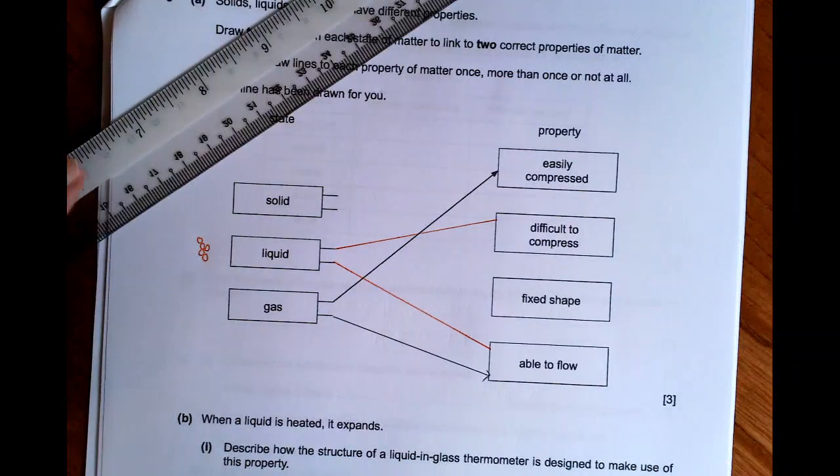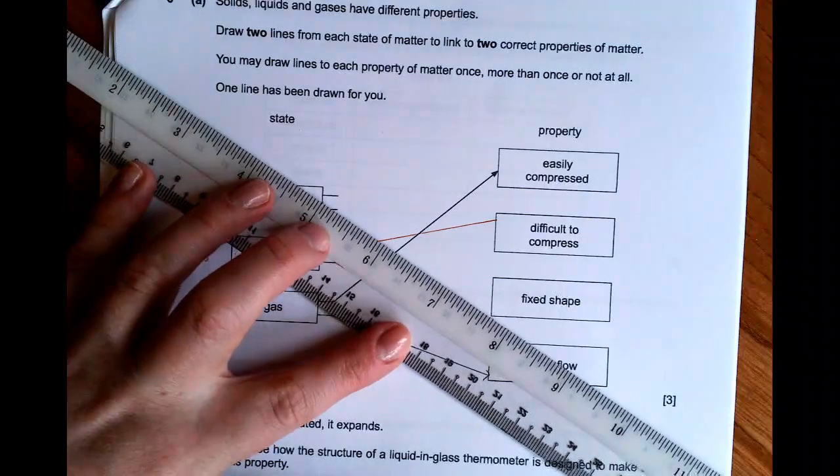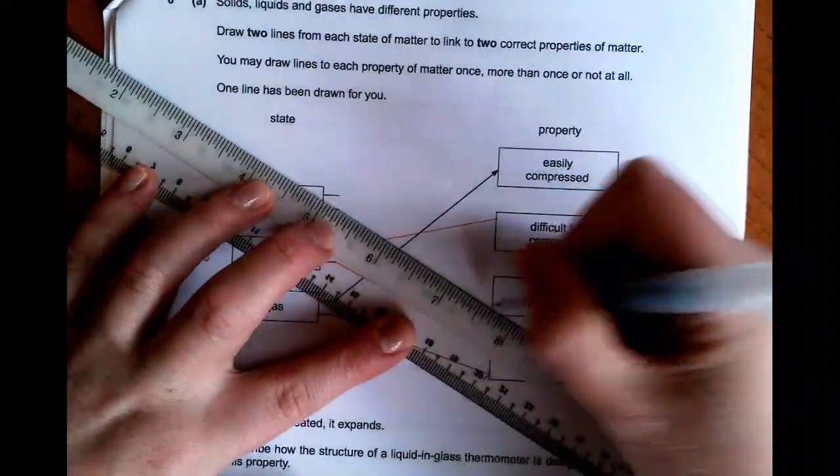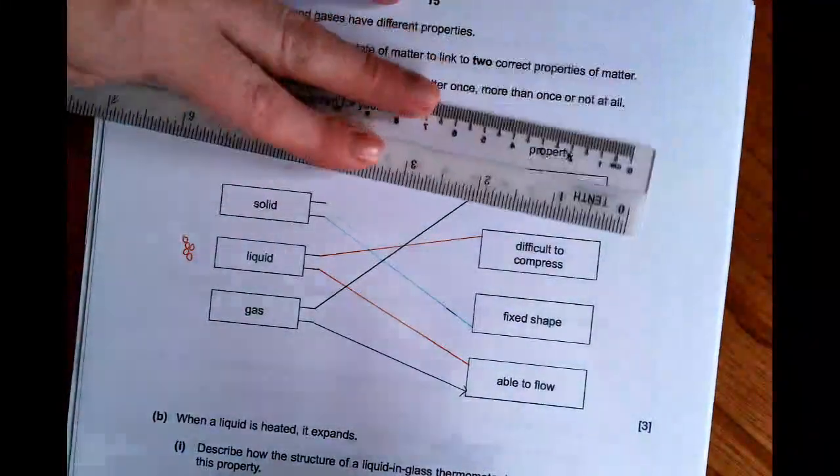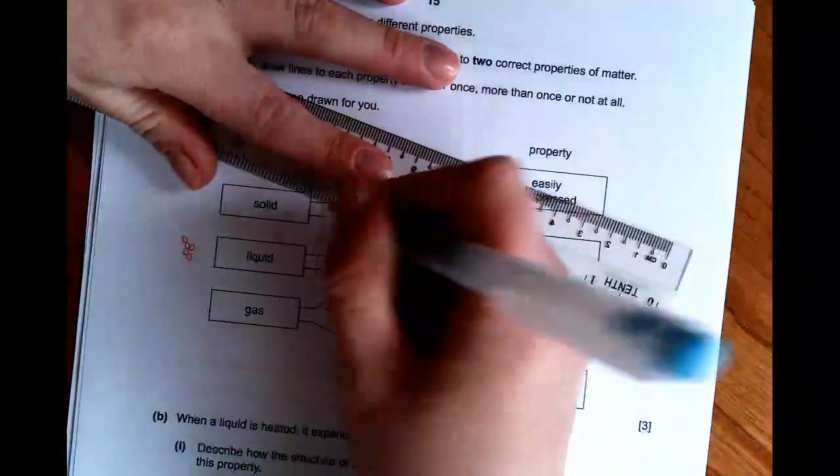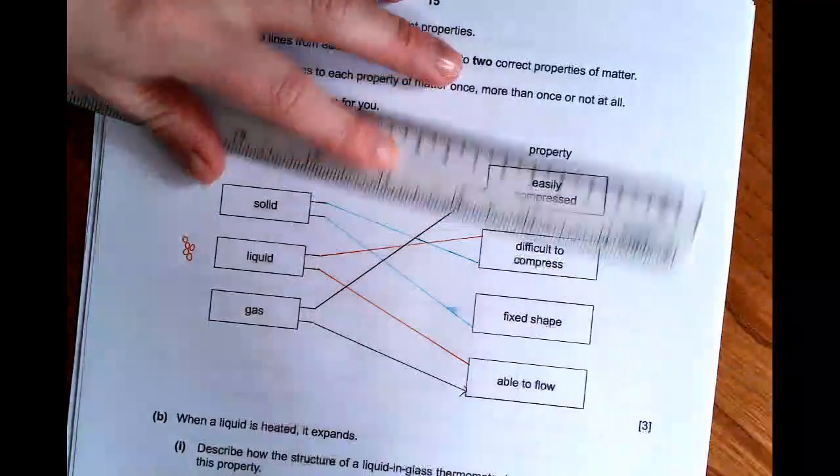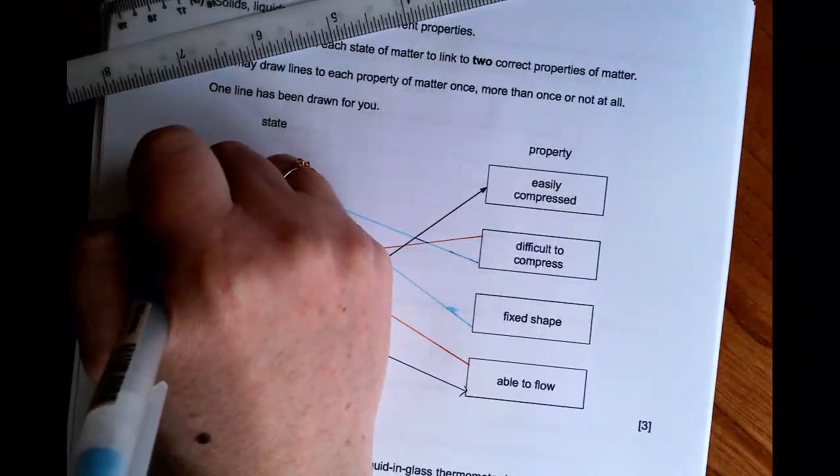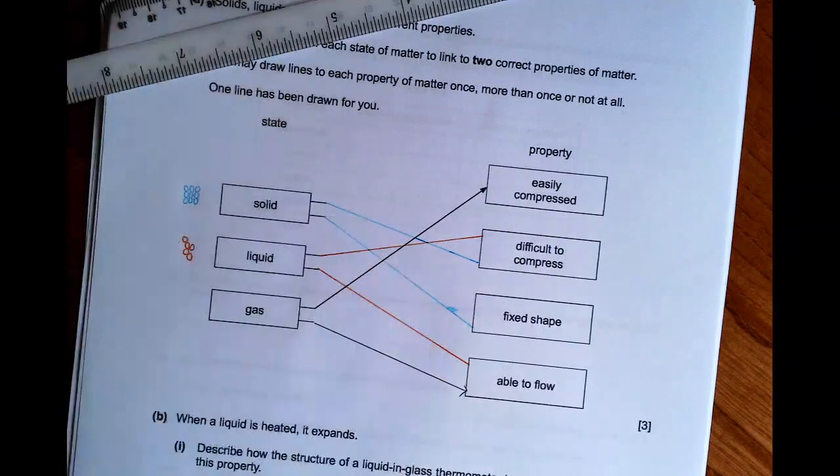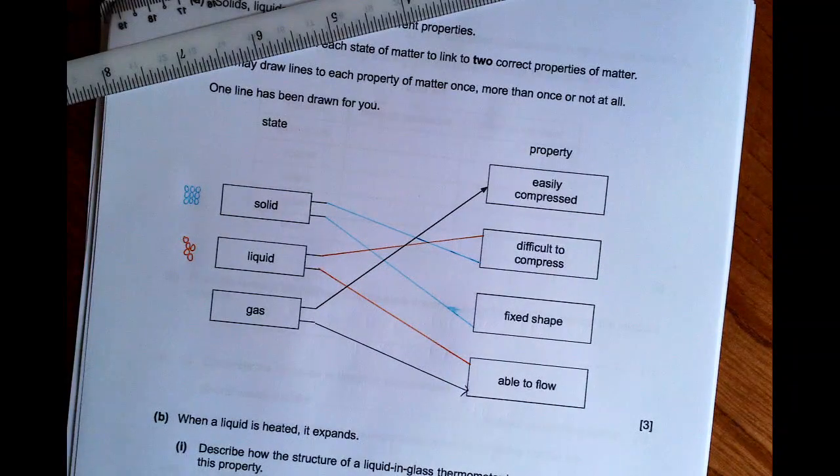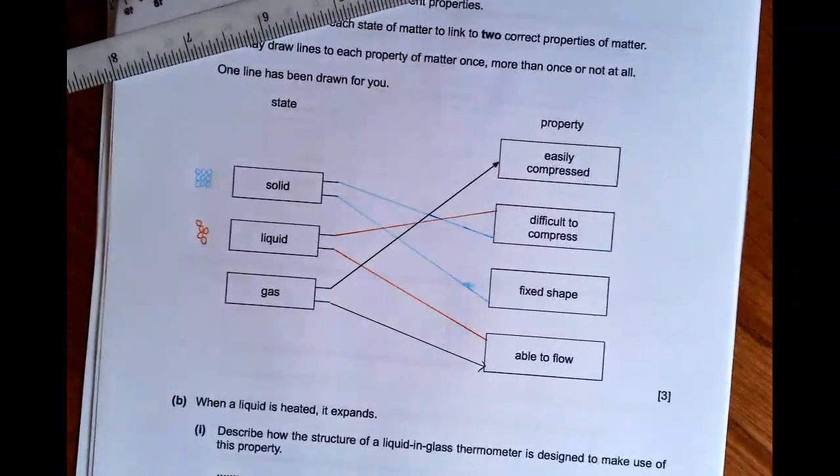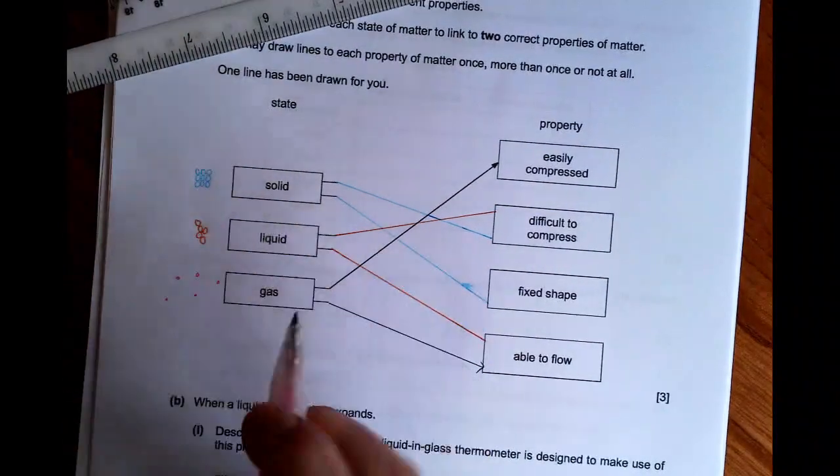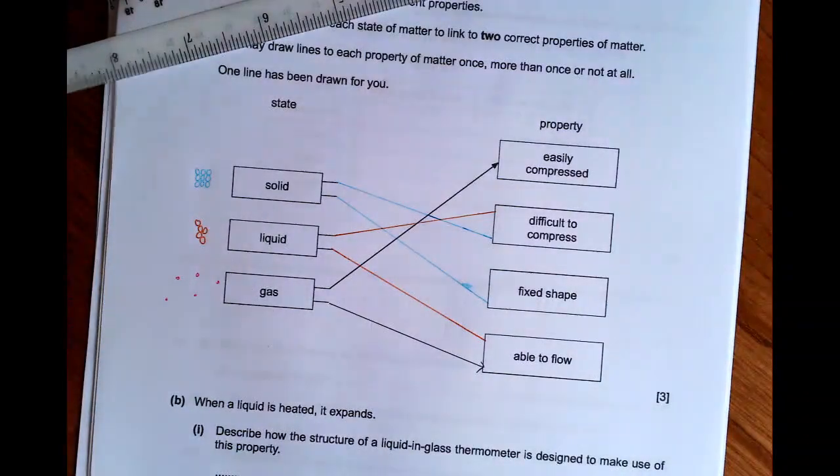And then lastly, hopefully you can get this. A solid obviously has a fixed shape, and also it is difficult to compress. You have your bonds are very strong, your rigid lattice structure. There's no space in between, really, to compress. Whereas with a gas, there's obviously a lot of space in between molecules. So it's very easy to push them closer together.